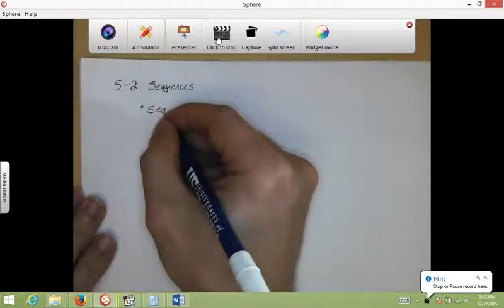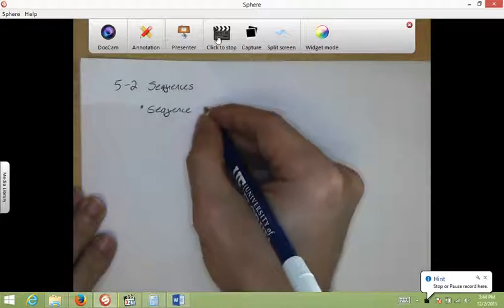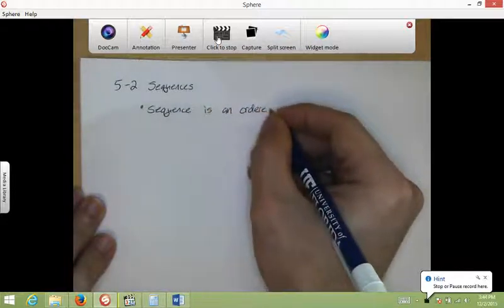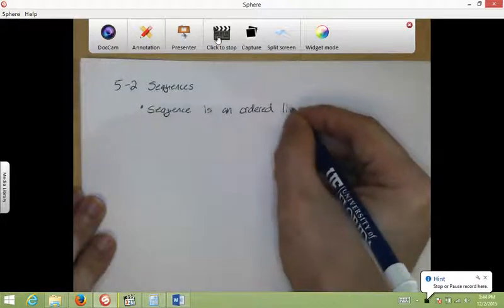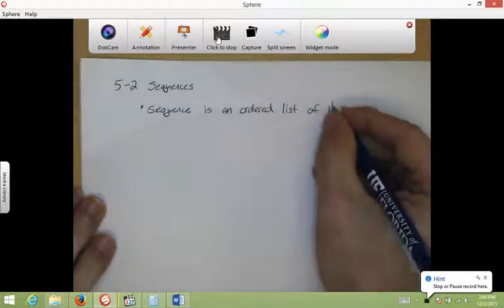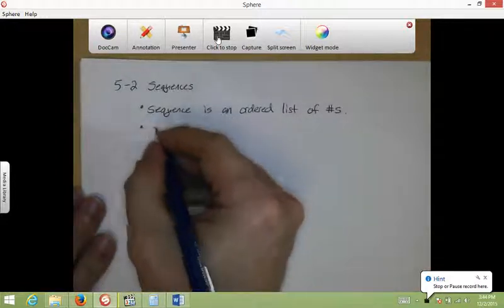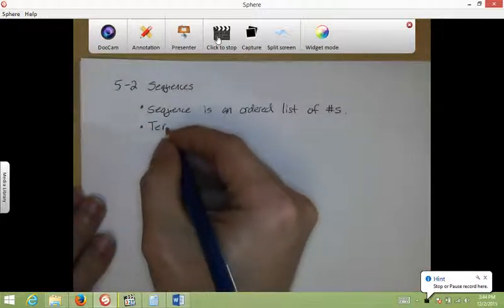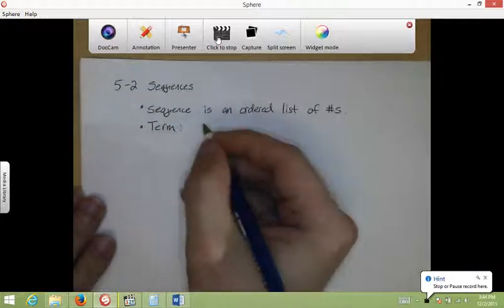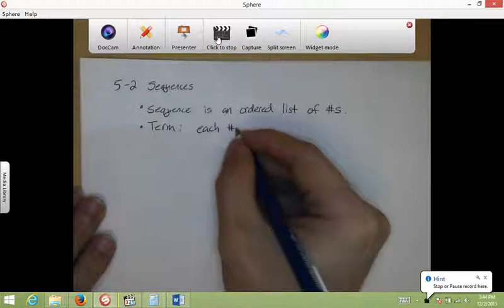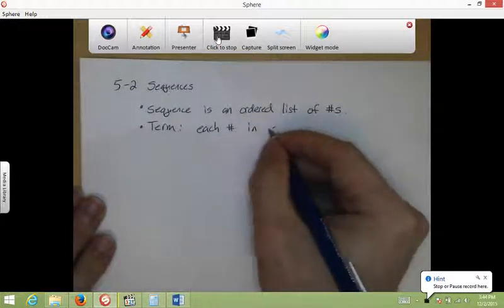A sequence is an ordered list of numbers. Next vocabulary word we have is term.